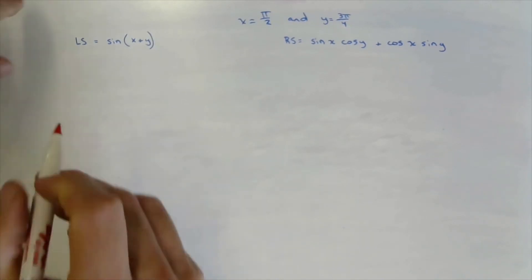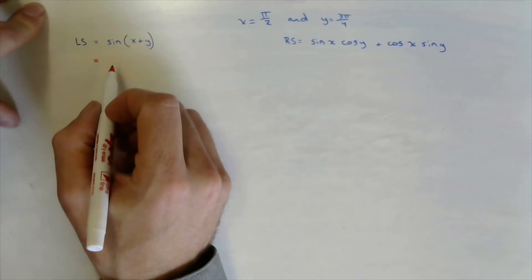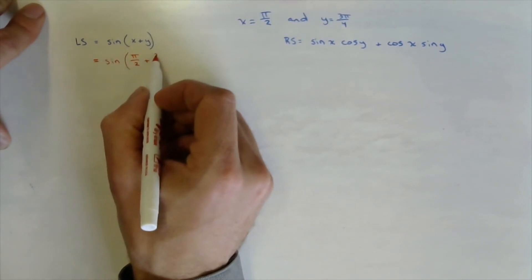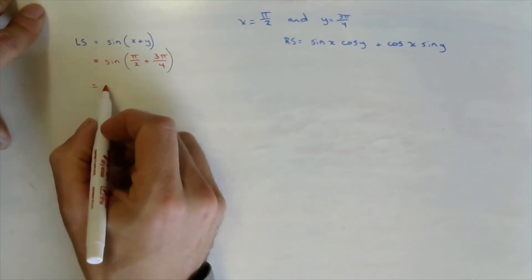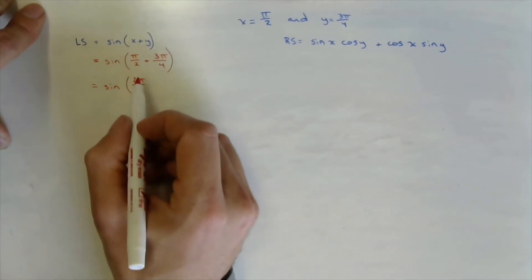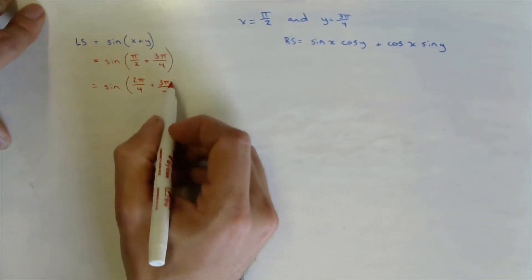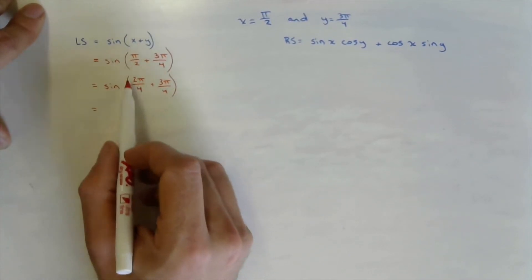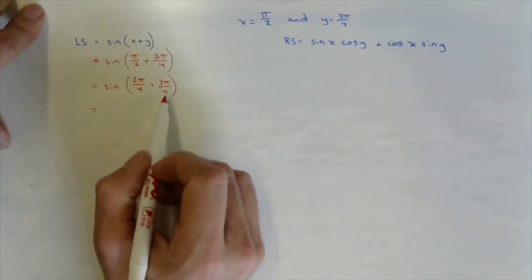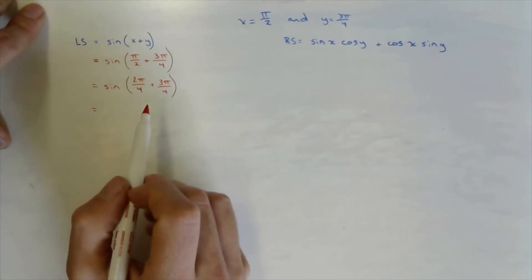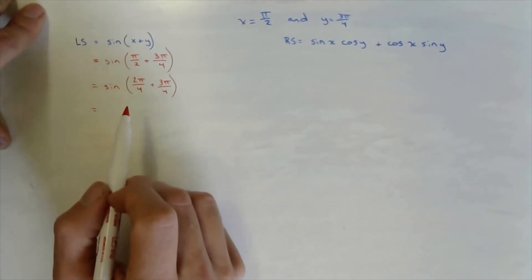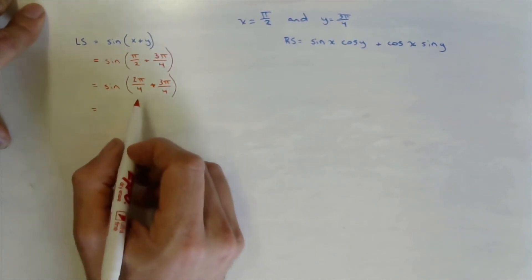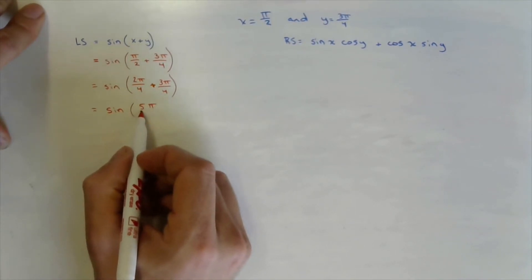We're just going to substitute in our values of x and y and use our known values for our special angles. So we have the sine of, in brackets, pi over 2 plus 3 pi over 4. We're looking for fractions over 4, so pi over 2 becomes 2 pi over 4, so that we can add with a common denominator. Notice I'm never approximating — I'm never throwing this in a calculator. This is how to get the exact value. So we have 5 pi over 4, and the sine of 5 pi over 4 from our unit circle is negative 1 over radical 2.